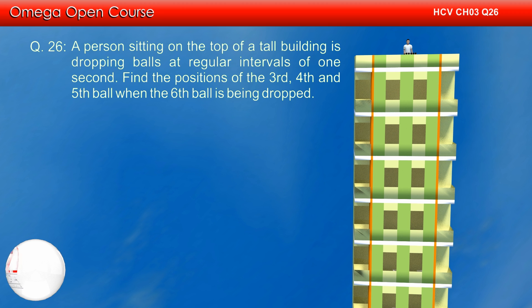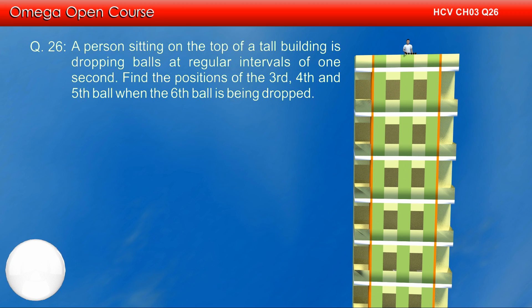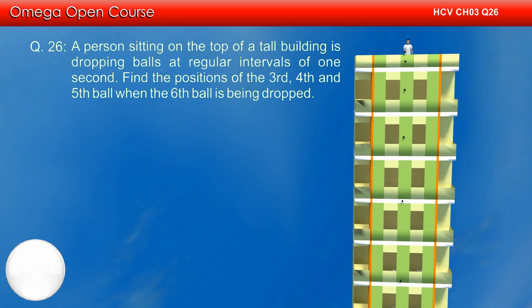A person sitting on the top of a tall building is dropping balls at a regular interval of one second. Find the positions of the third, fourth, and fifth ball when the sixth ball is being dropped.